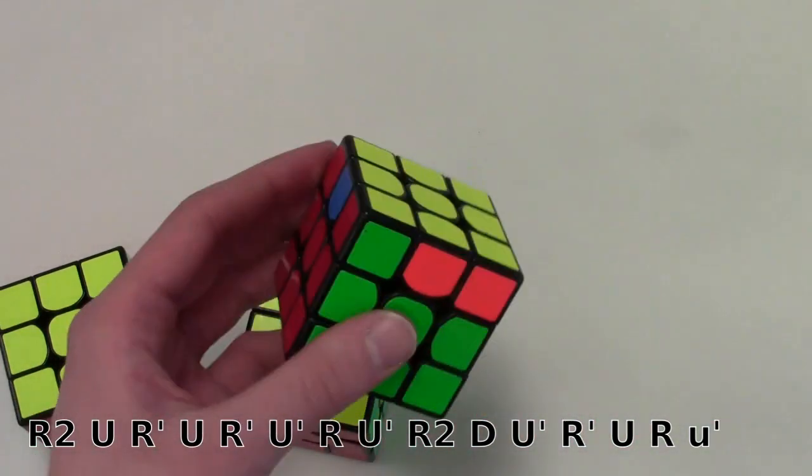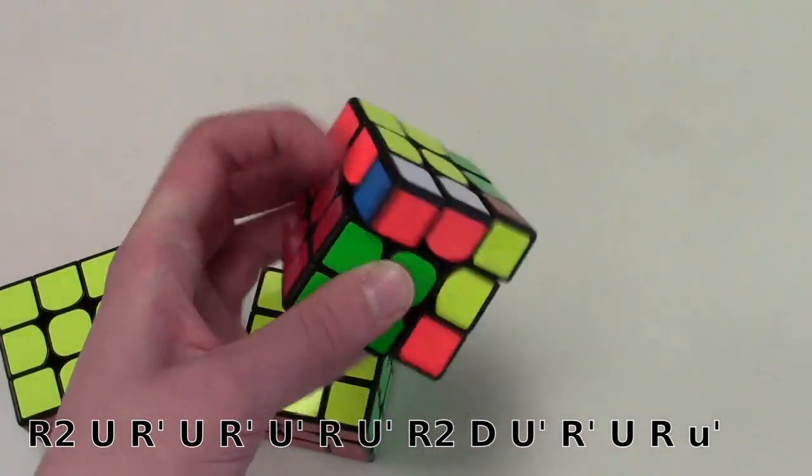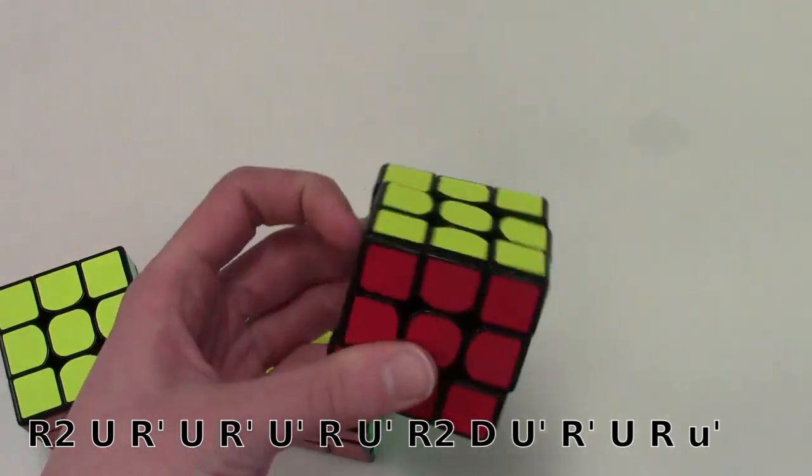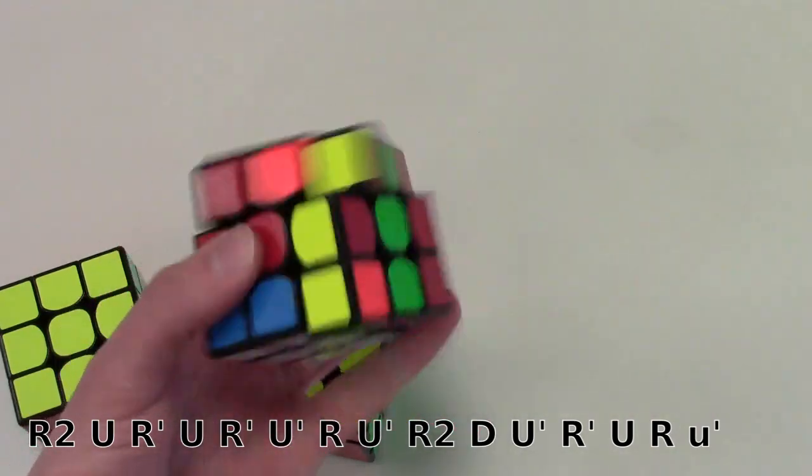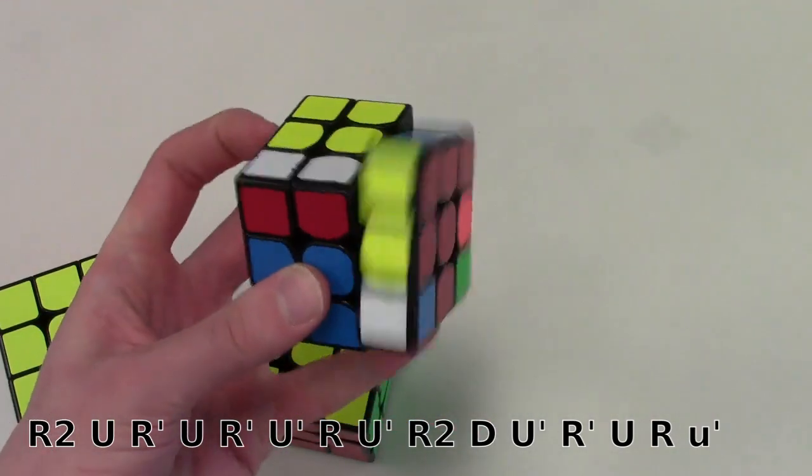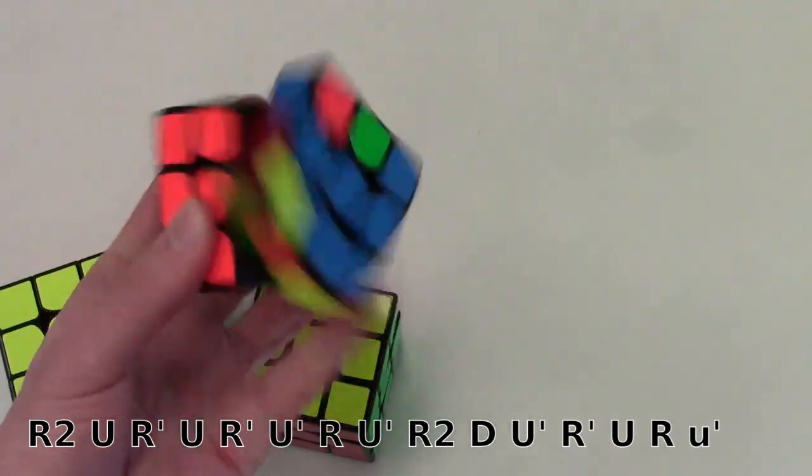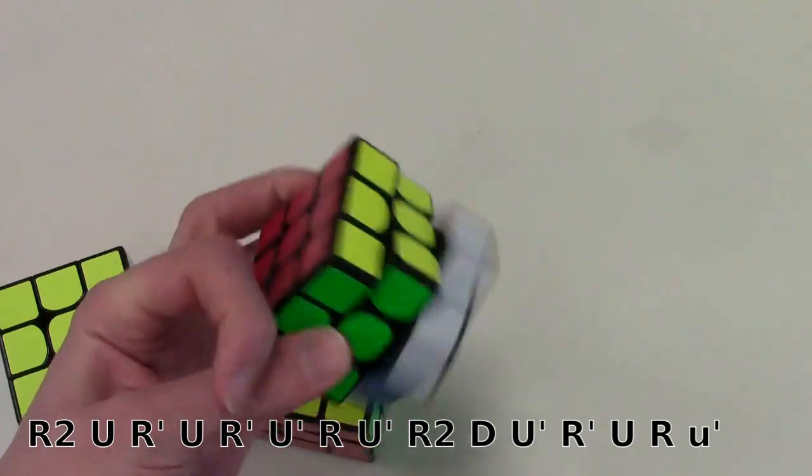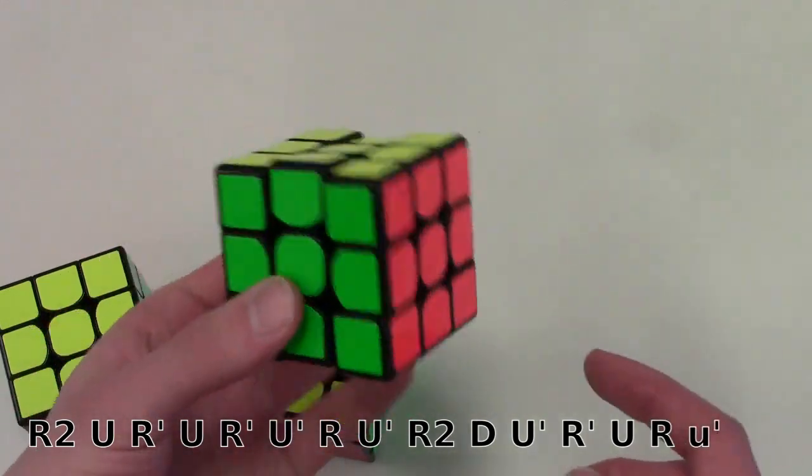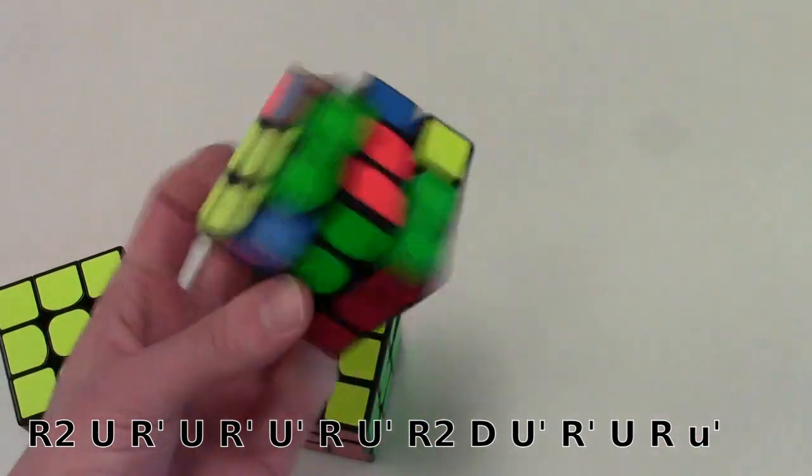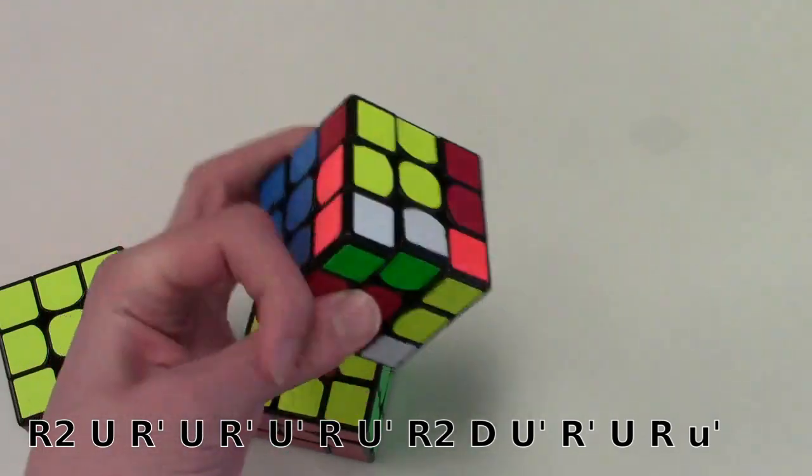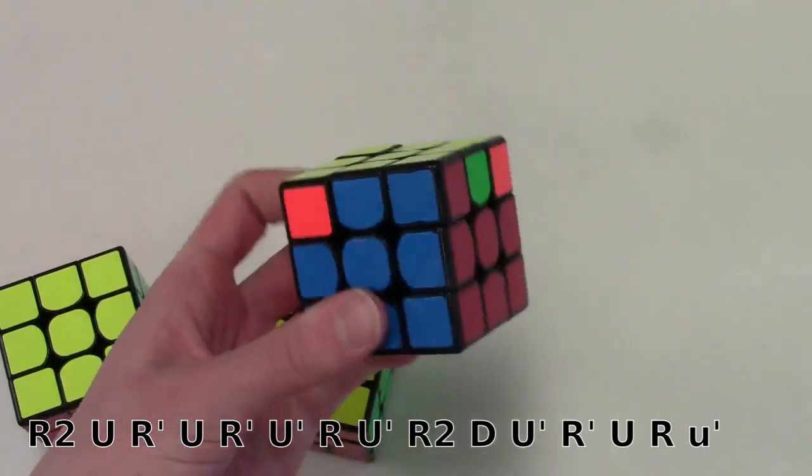So this is what this algorithm looks like a little faster. As you can see, I sometimes mess up a little bit. It's not quite as reliable as the other one.